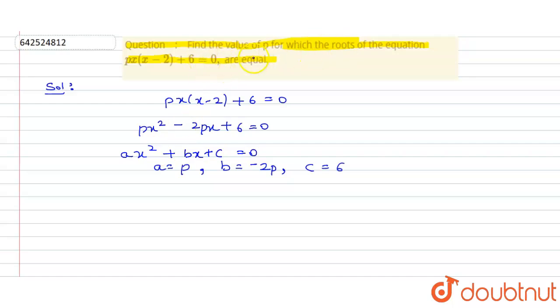We have got roots of this equation are equal. We know that roots are equal when D equals 0, and we know D equals B squared minus 4AC.